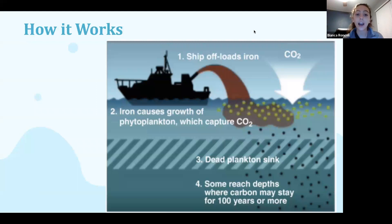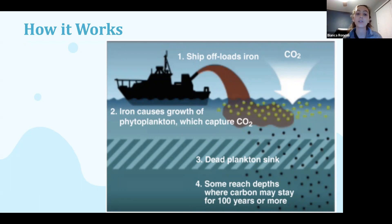Here's a visual of how this process works. First, iron is dumped into the ocean, allowing for the phytoplankton to begin to bloom, capturing carbon dioxide through photosynthesis, and when the phytoplankton dies, it sinks to the bottom of the ocean, trapping the CO2 into the ocean floor sediment.